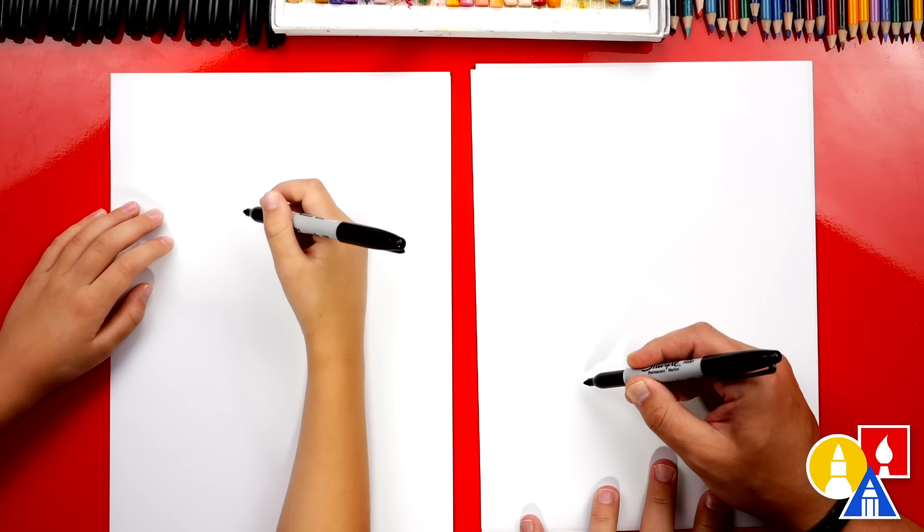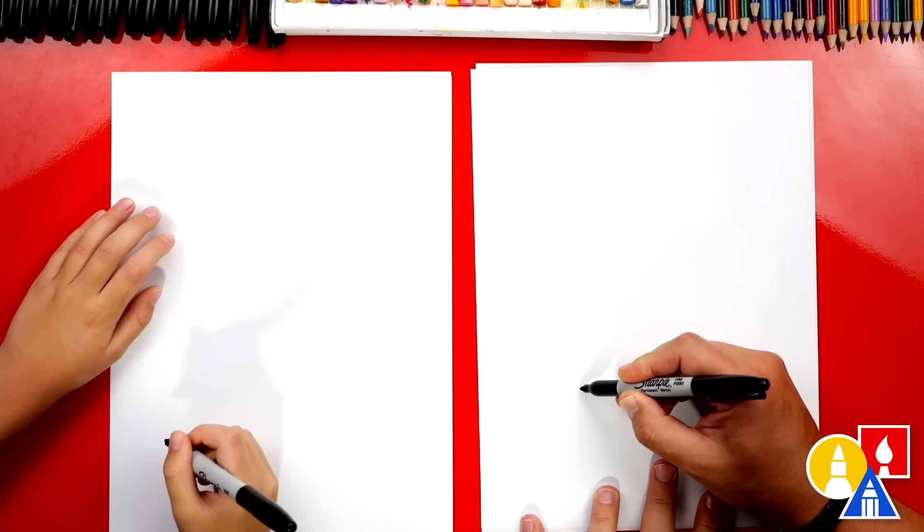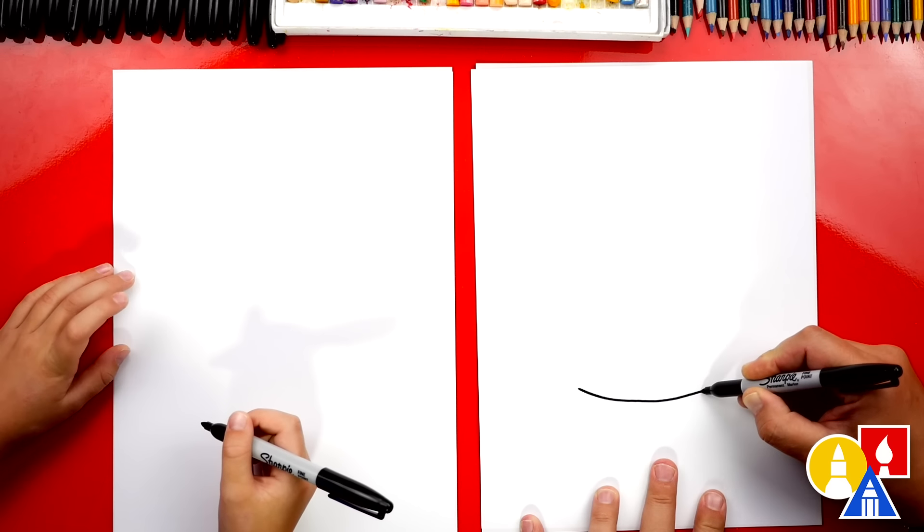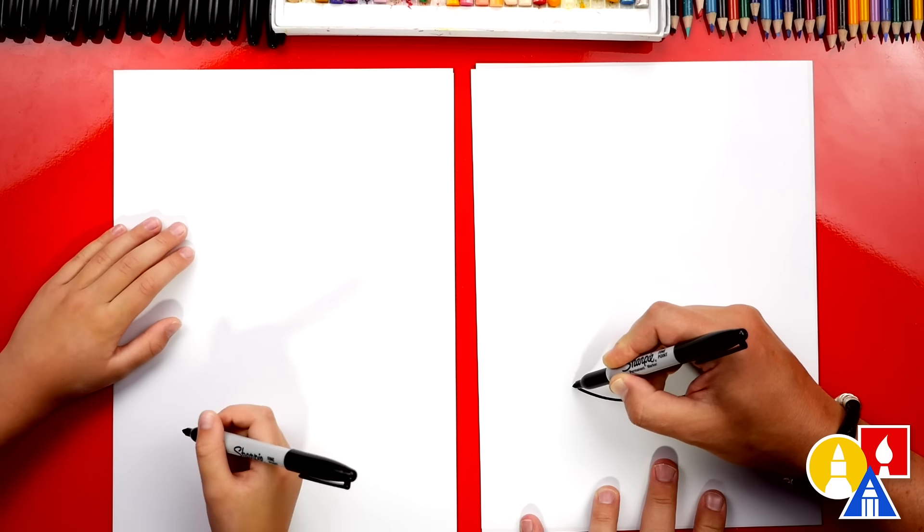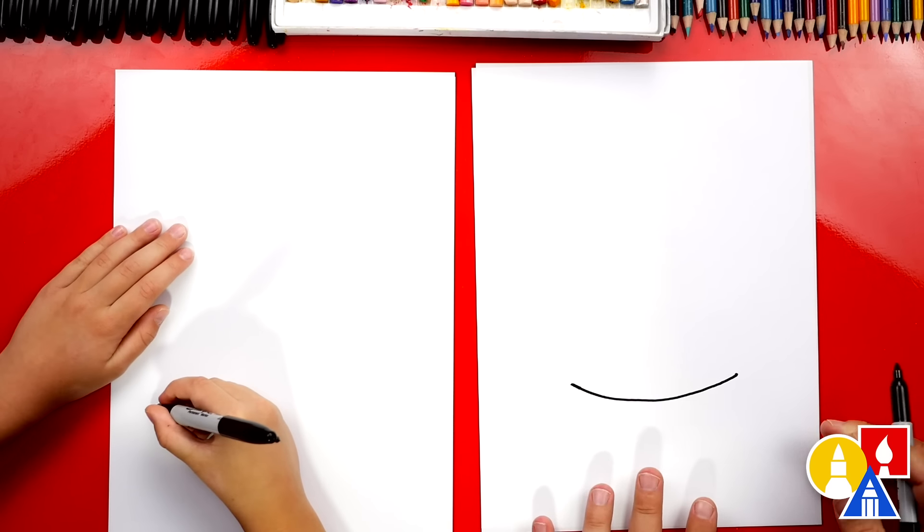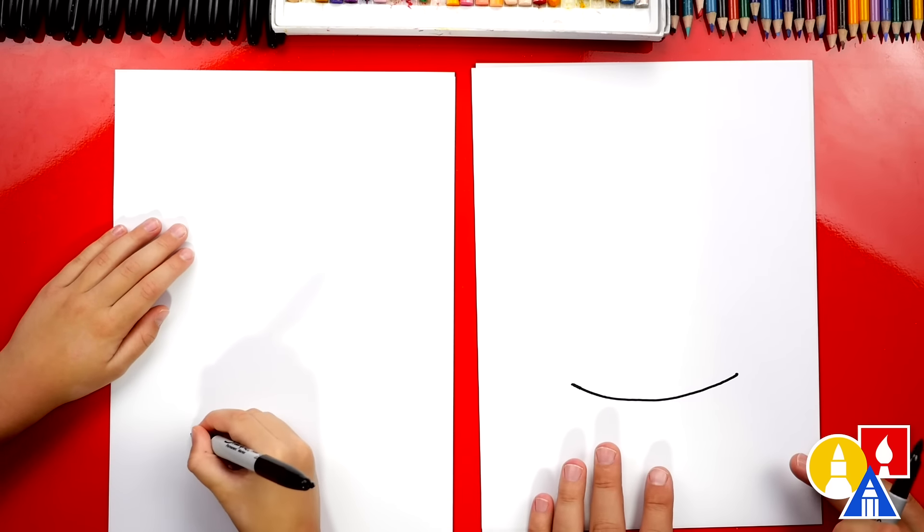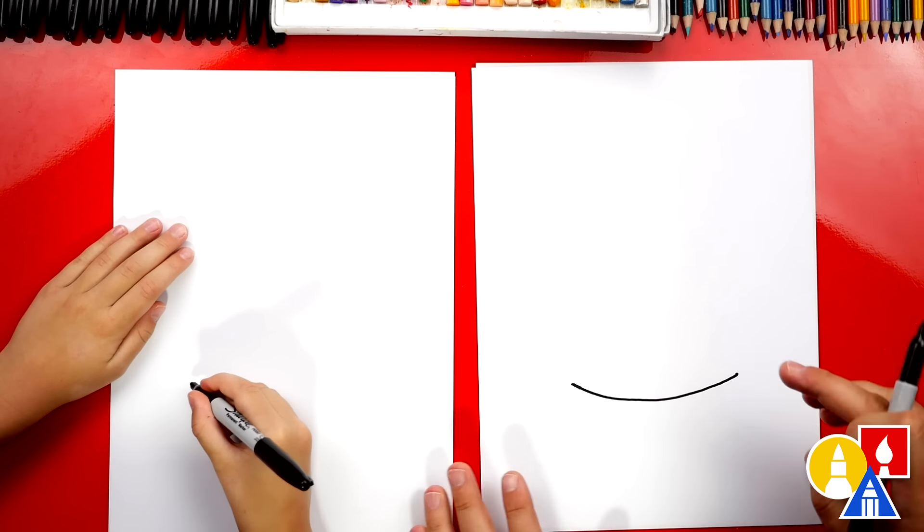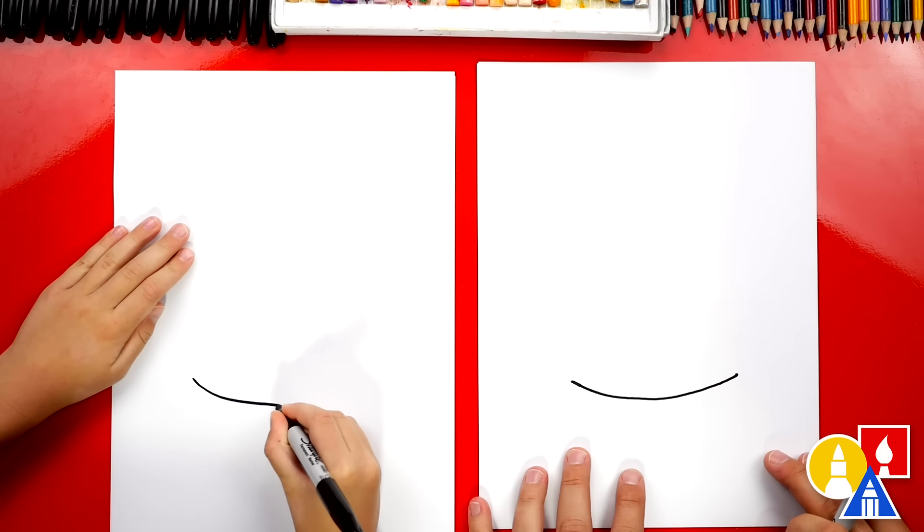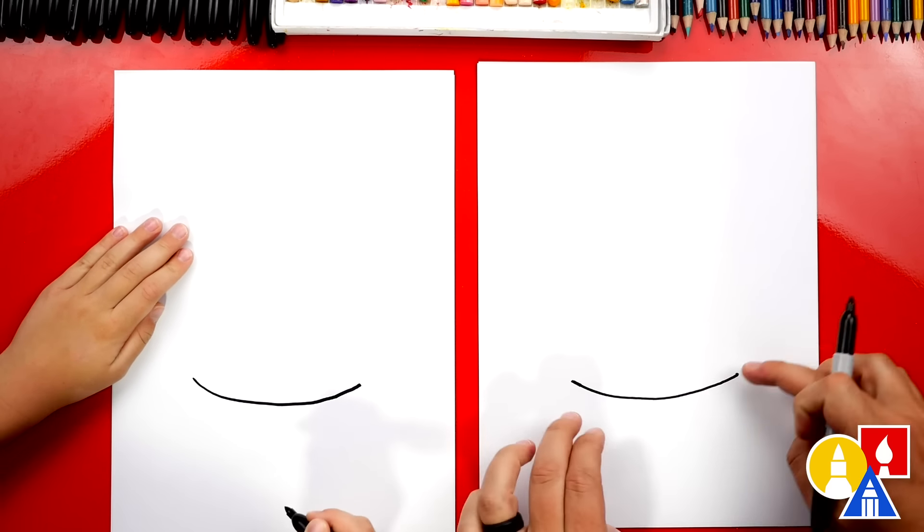Let's first start down here at the bottom of our paper and we're going to draw a curve. It looks like a smile. This is for the bottom of our hat. We're going to start maybe right about here. You could draw a curve right here in the middle, maybe a little higher too. Looks like a smile.